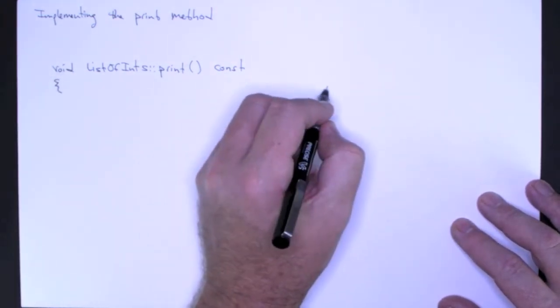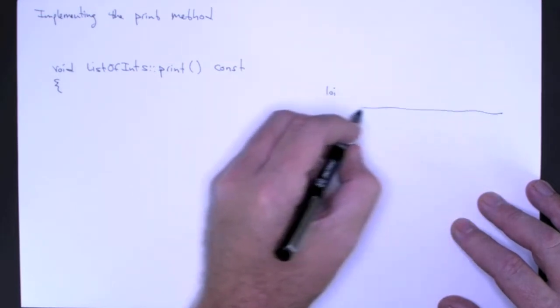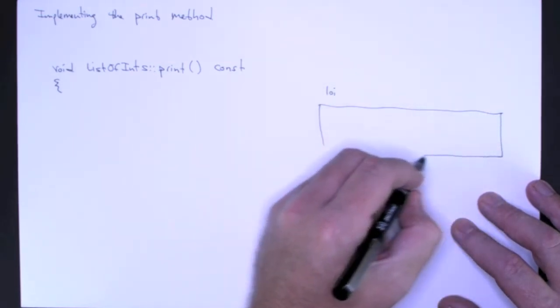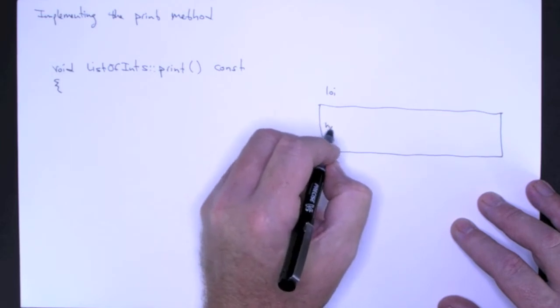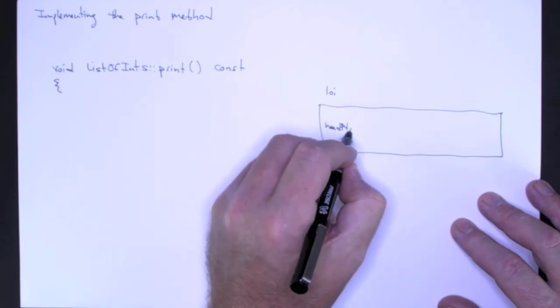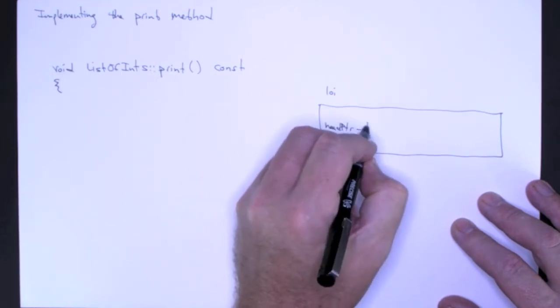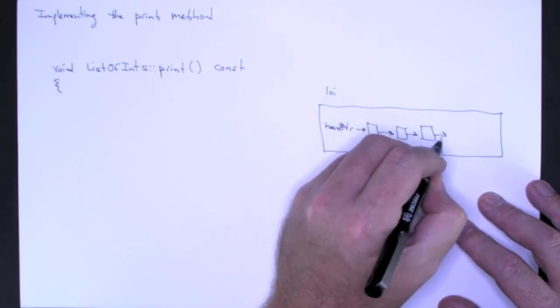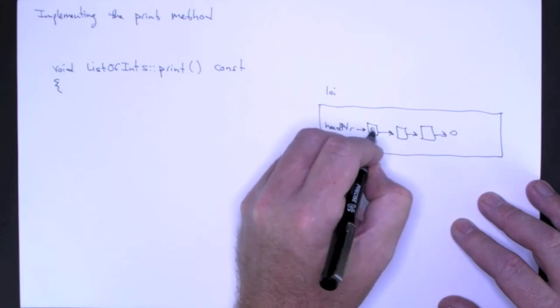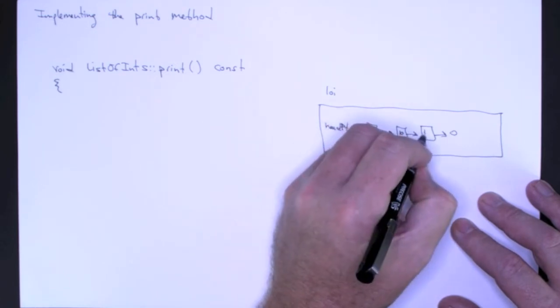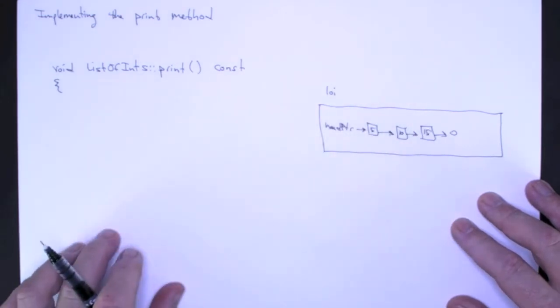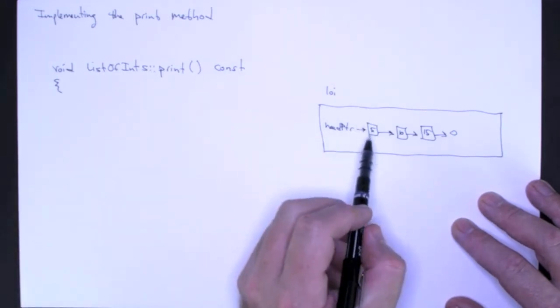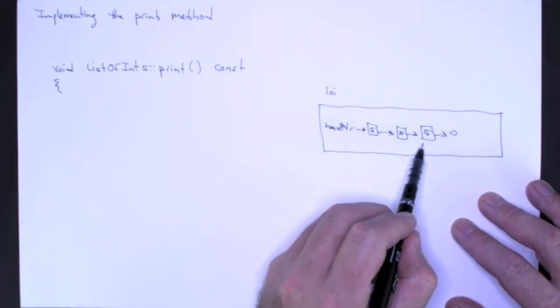So again let me just draw a picture. Here I have a list of integers. We have head pointer—I'm going to shorten my notation up a little bit. So we have 5, 10, and 15 stored in my list of integers. And what we want to do is we want to print 5, 10, and 15.